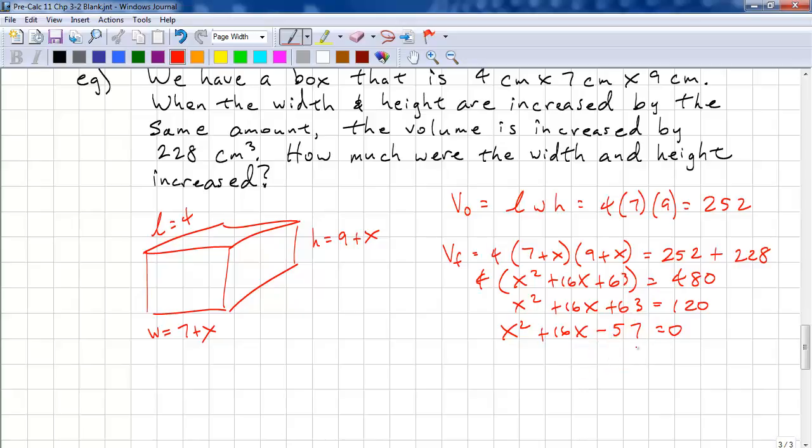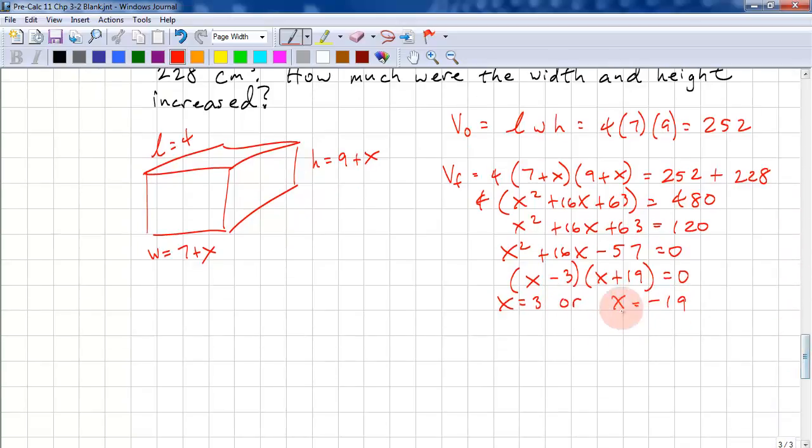So, we have X squared plus 16X plus 63 equals 120. Now, we isolate and move everything to one side. So, we have X squared plus 16X minus 57 equals 0. And now we factor this. You should practice your product factor sum method if you don't know how to factor this. And our answer is X equals 3 or X equals negative 19. This is our answer.